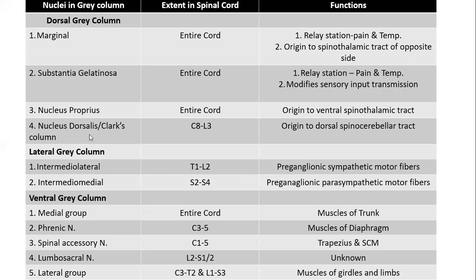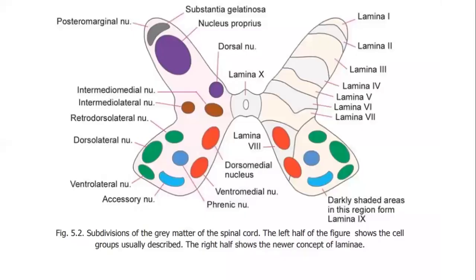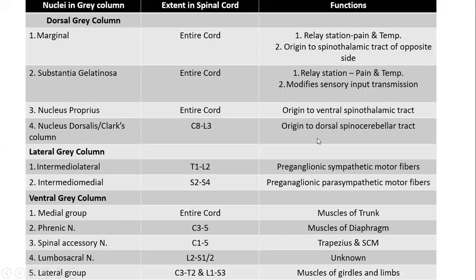Nucleus dorsalis, also called Clark's column or dorsal nucleus, is usually present at the base of the dorsal gray horn. It gives rise to the dorsal spinocerebellar tract, which is again an ascending sensory tract from the spinal cord to the cerebellum.